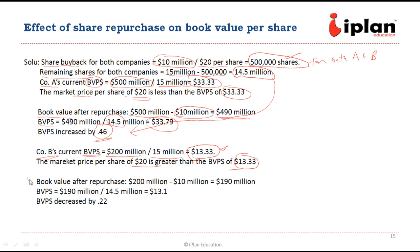Now let us notice what happens after the repurchase for Company B. The book value is reduced by $10,000,000, giving a new book value of $190,000,000. Book value per share is $190,000,000 divided by 14.5 million outstanding shares, which equals $13.10. So the book value has been reduced by $0.22. There is a reduction in book value for Company B, whereas for Company A there was an increase.